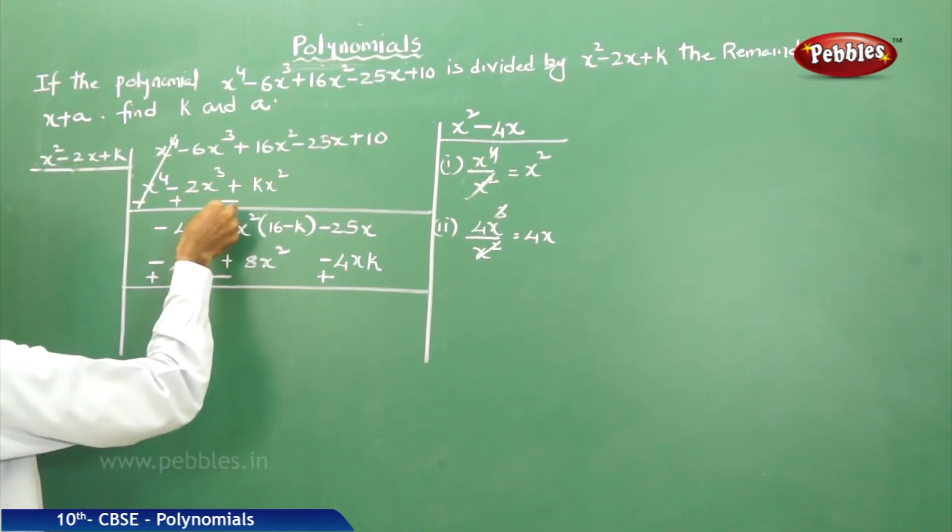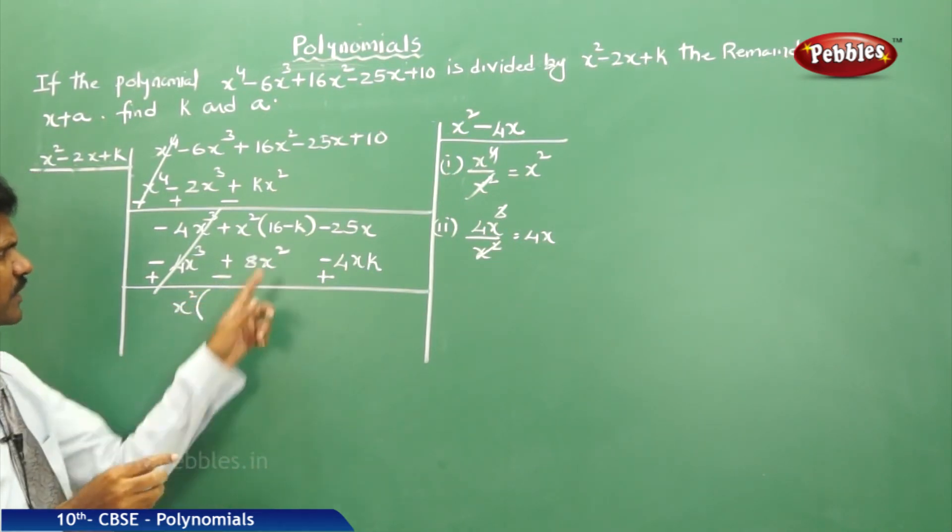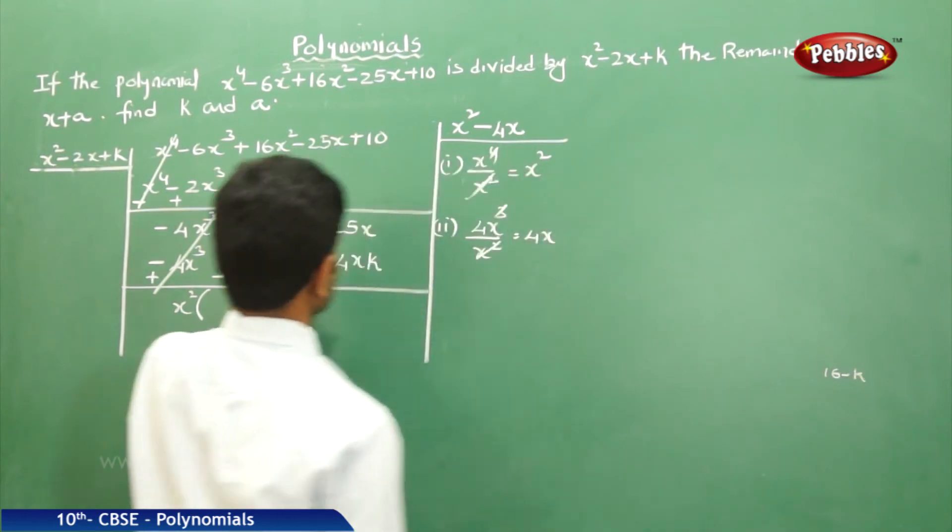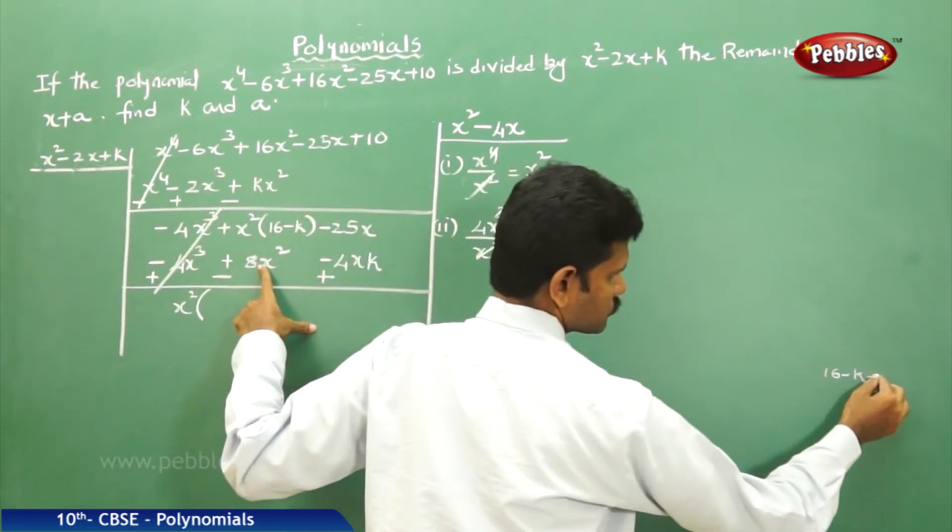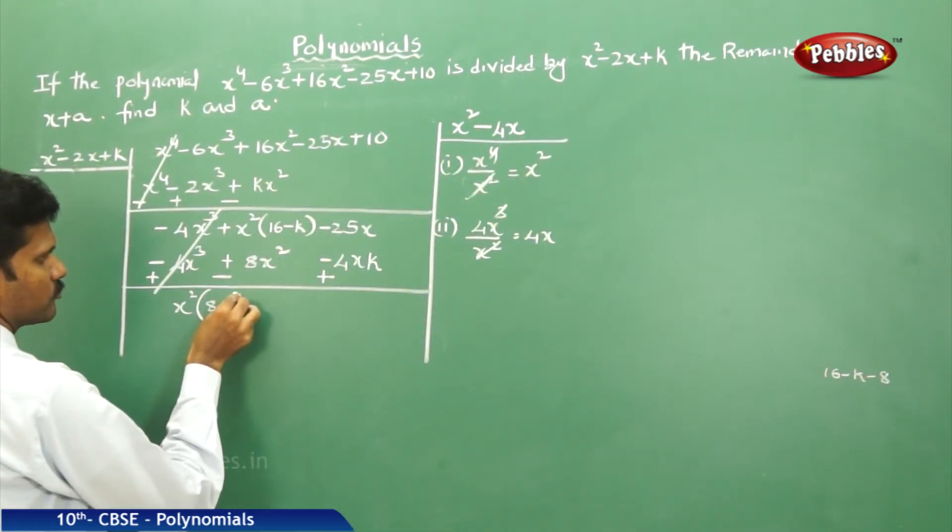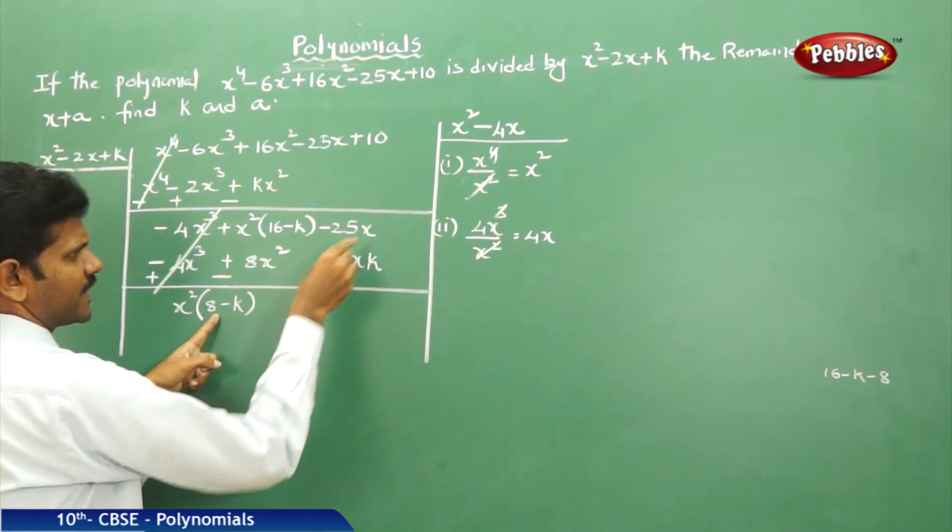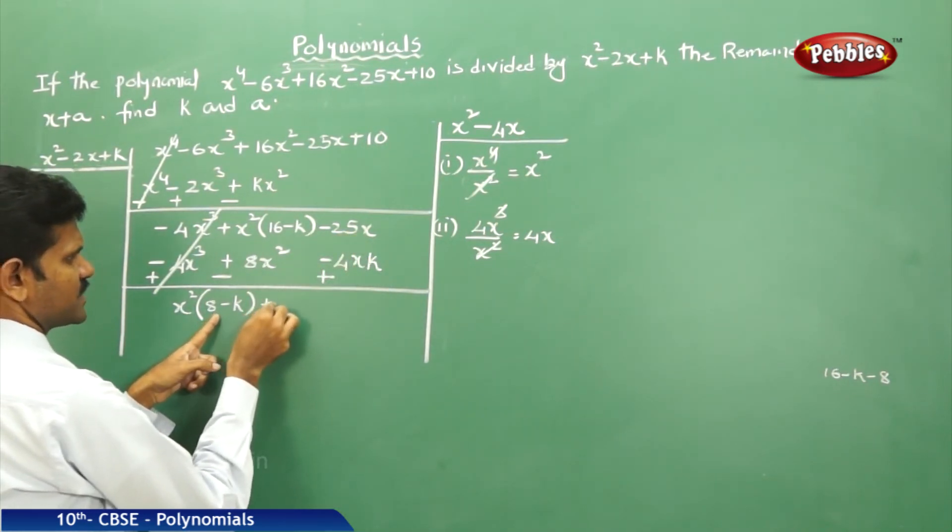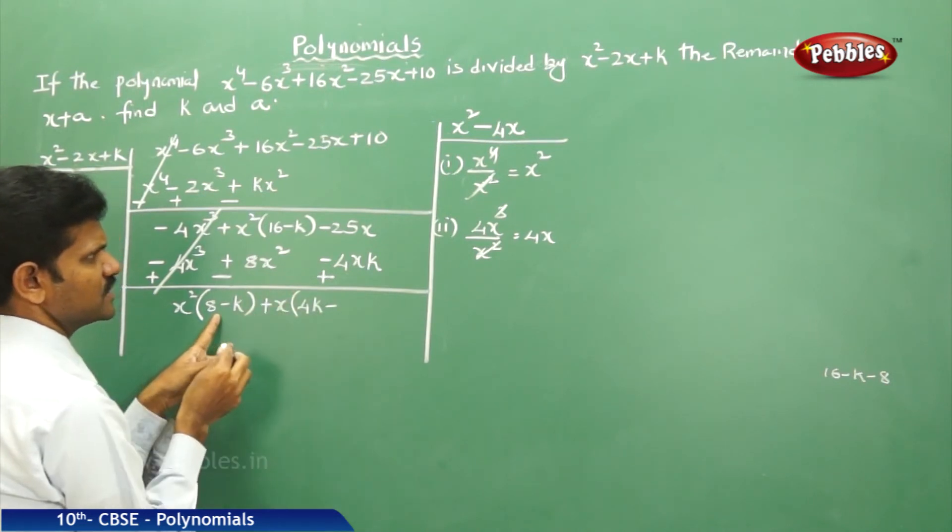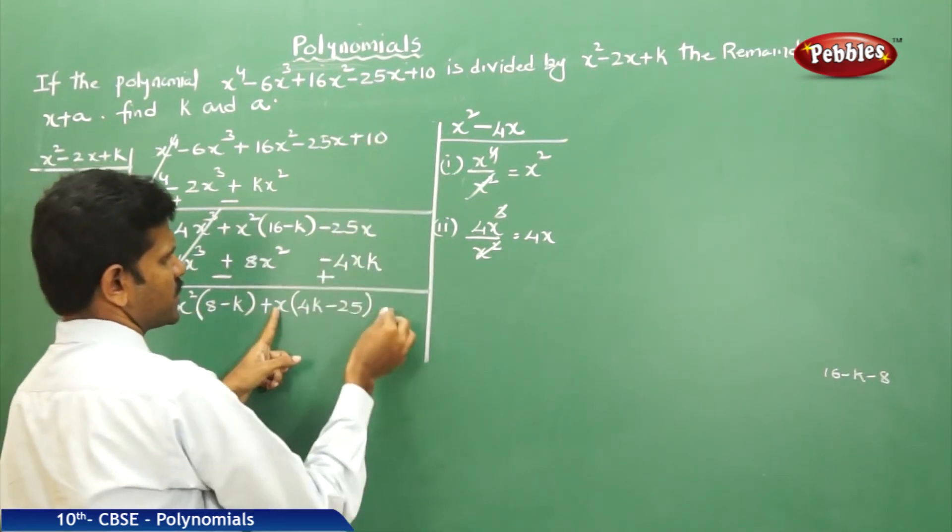Now get cancelled. Again in this one, take x² common. If you take x² common, the rest of the parts are 16 minus k minus 8. That is 16 minus 8, that is nothing but 8 minus k. Now x² term is 8 minus k. Next, x term, from these two take again x common. That is plus x common. If you take plus x common, 4k minus 25 left. x², x. Next one is a constant, plus 10 down.